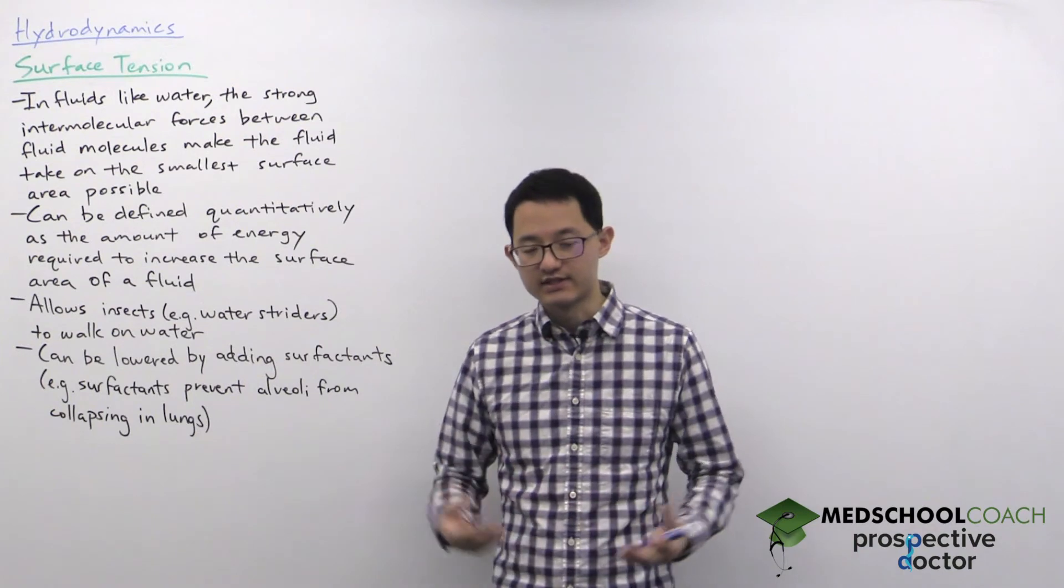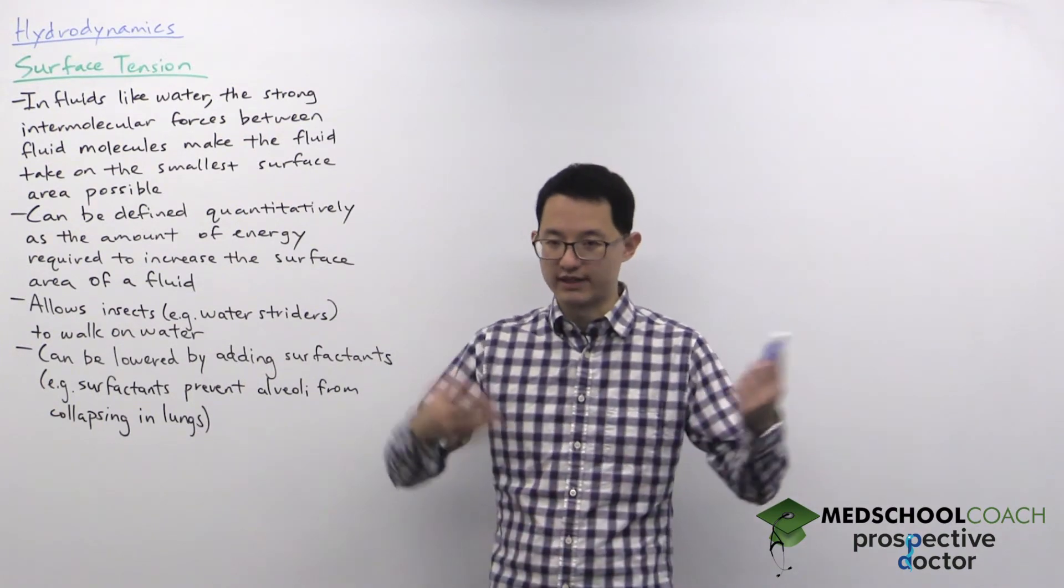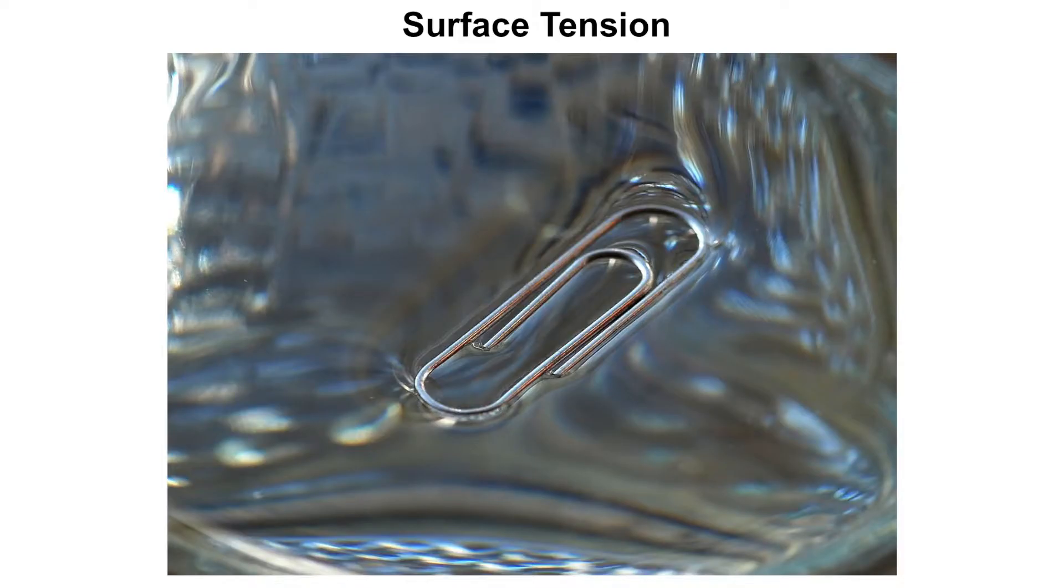You've seen surface tension in many situations, like in this diagram where someone can put a paper clip and the paper clip can actually just sit on top of the fluid. It'll push down on the fluid, but the weight of the paper clip actually isn't enough to break through the surface tension of the fluid.